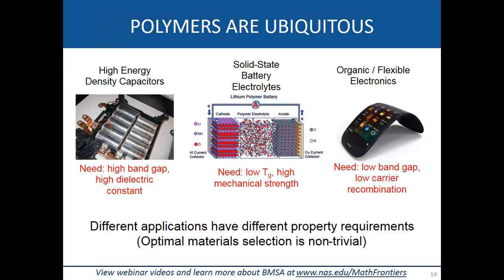For the third application — organic electronics — you want a low band gap because you want conduction to be favored. But if you have a lot of charge carriers, you don't want them to recombine, so low carrier recombination is also required. Depending on the application, you have different property requirements, and it's highly non-trivial to choose a polymer that suits the need.